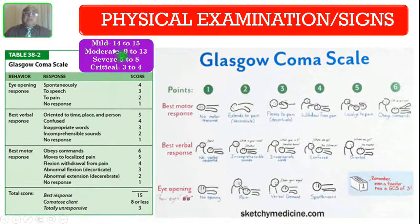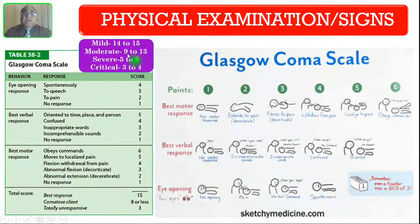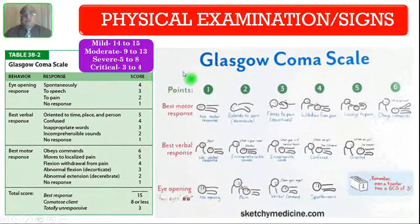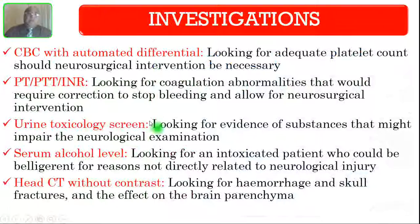The GCS grading: a score of 14 to 15 is mild head injury; 9 to 13 is moderate head injury; 5 to 8 is severe; and 3 to 4 is critical.